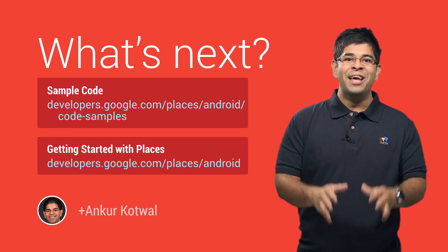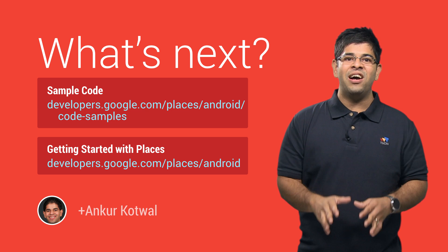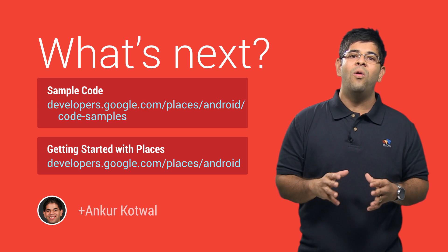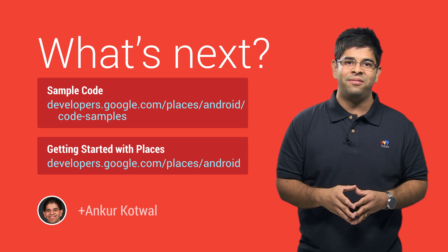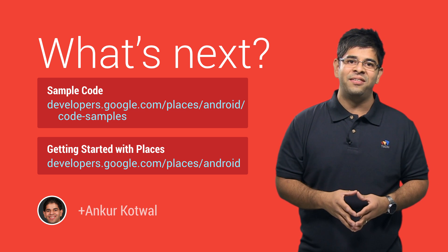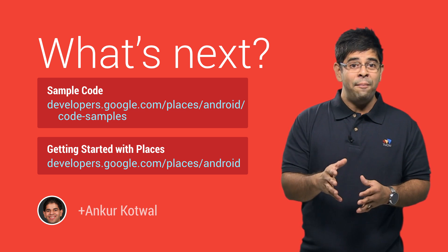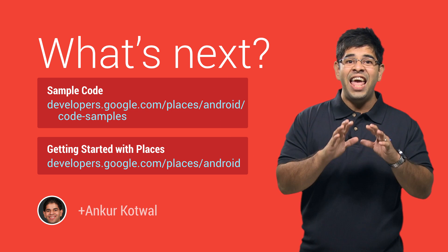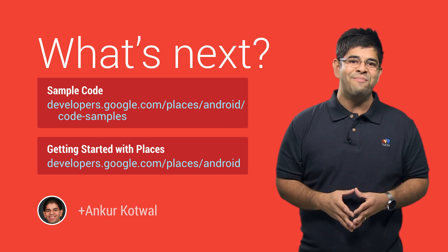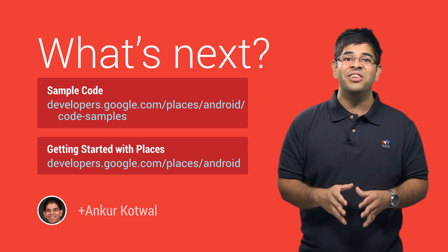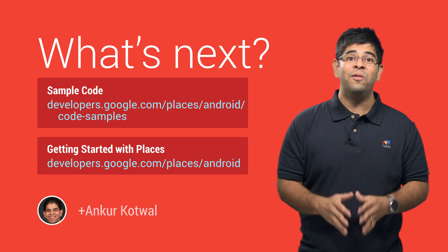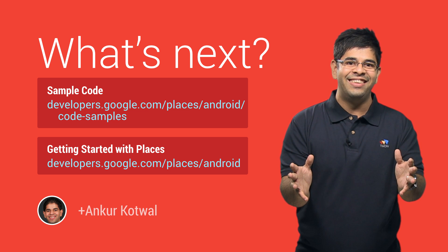When it comes to location, the Places API makes it really easy to free your users from a world of long mysterious numbers by bringing real entities to your apps. The sample code at this link contains everything you need to get started in dramatically improving your users' location experiences. I look forward to seeing what you build using Places.